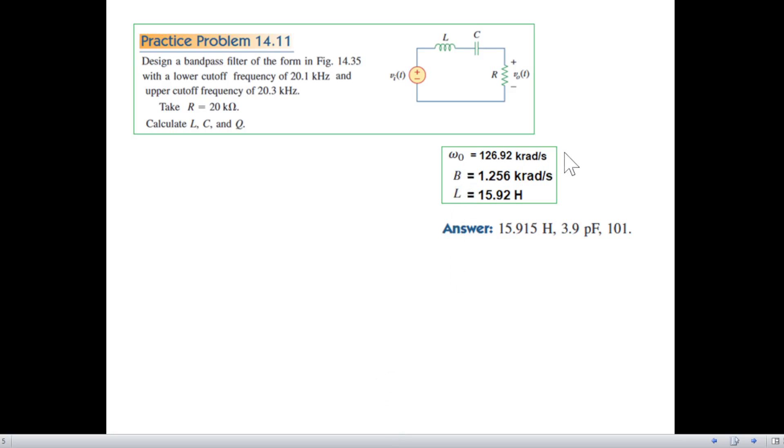R is 20 k and bandwidth is 1.25 k, so L is 15.92 henry, one of the values we have found. Omega naught we have calculated, bandwidth calculated and L we have found. Answer: L is 15.915, we have found 15.92, so it's the same, not much difference.